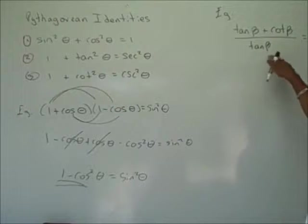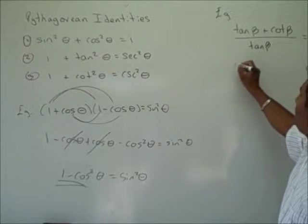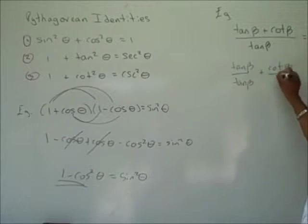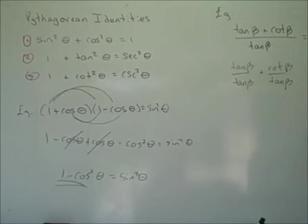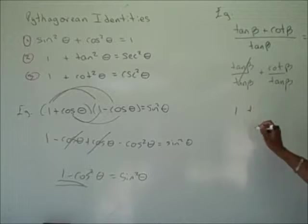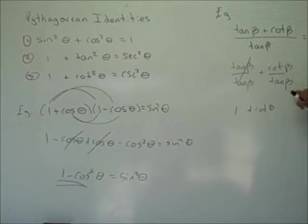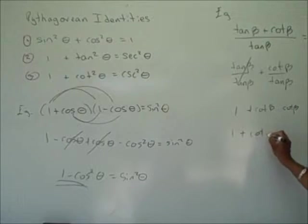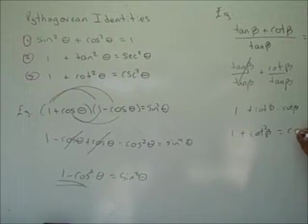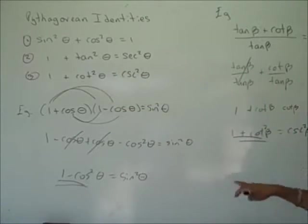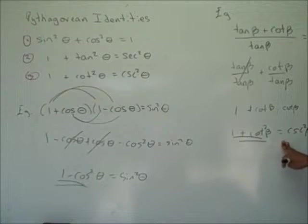In the second example, we divide both numerators by tangent beta: tangent beta over tangent beta plus cotangent beta over tangent beta. The first term reduces to 1, and cotangent beta over tangent beta equals cotangent squared beta. So this becomes 1 plus cotangent squared beta, which is equivalent to the identity 1 plus cotangent squared beta equals cosecant squared beta.